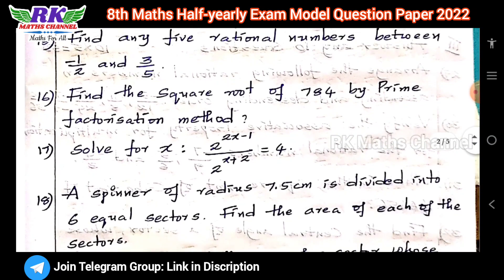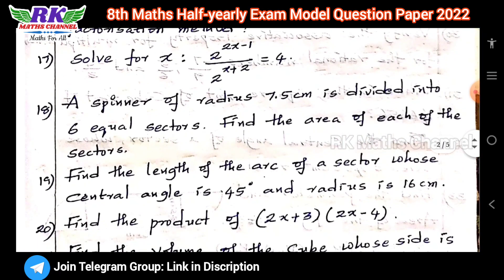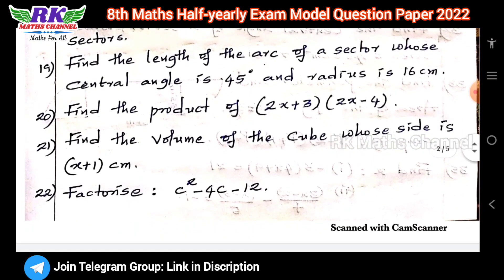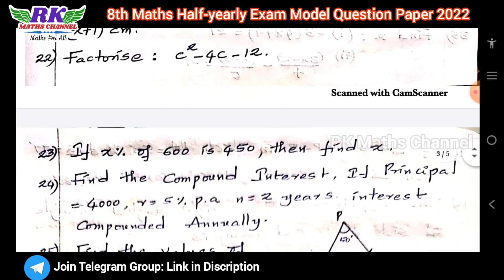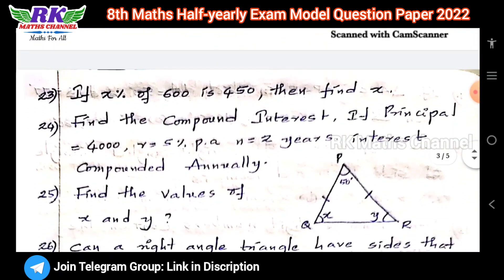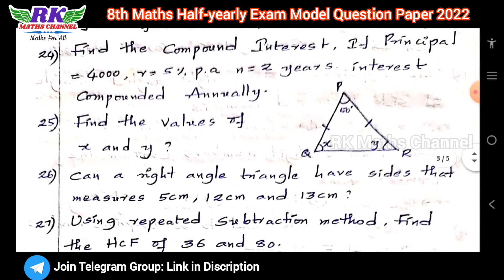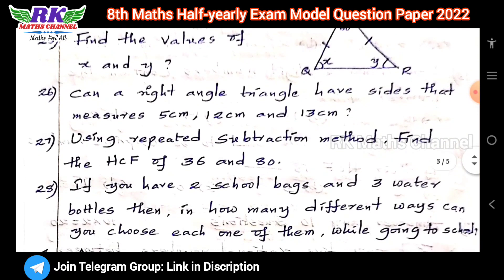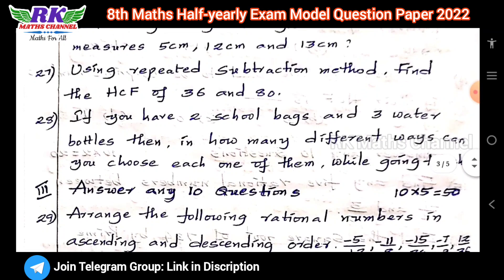The 2-mark questions are distributed by lesson: first lesson 3 questions, second lesson 2 questions, third lesson 3 questions, fourth lesson 2 questions, fifth lesson 2 questions, and seventh lesson 2 questions — total 14 questions. You have to write only 10 questions.